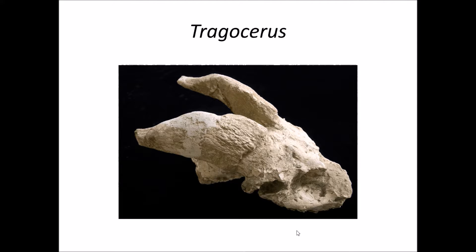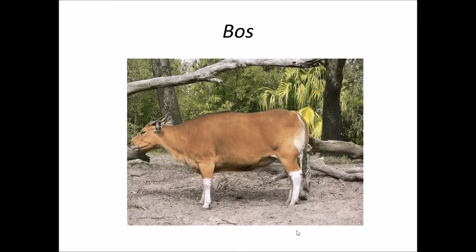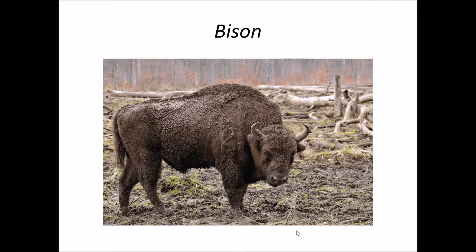Trigoceros belongs to the family Bovidae, which includes creatures like goat, sheep, and cows. Bos and Bison also belong to the Bovidae family and their fossils are also recovered from the upper Shivalik.